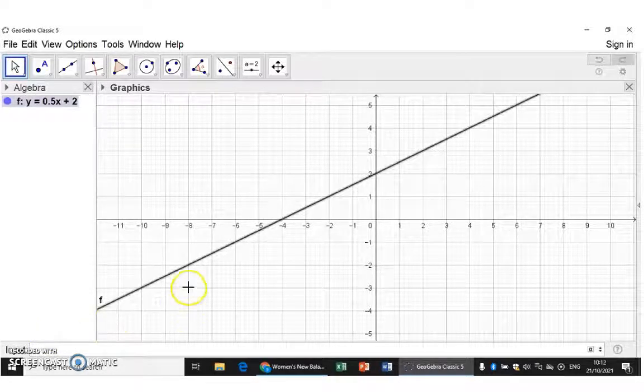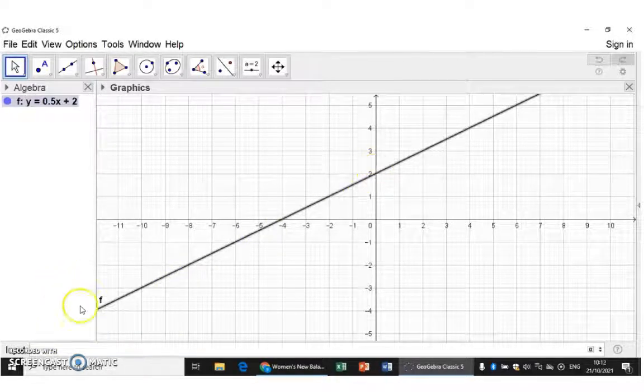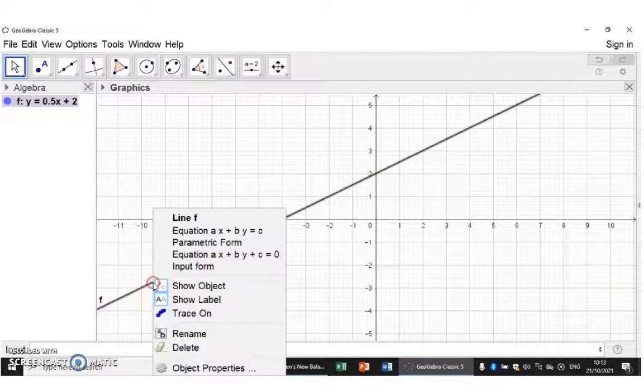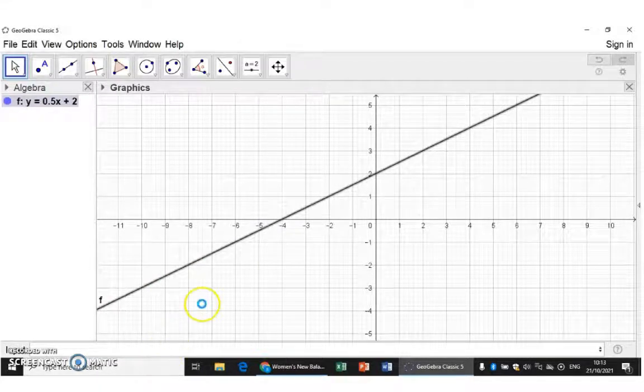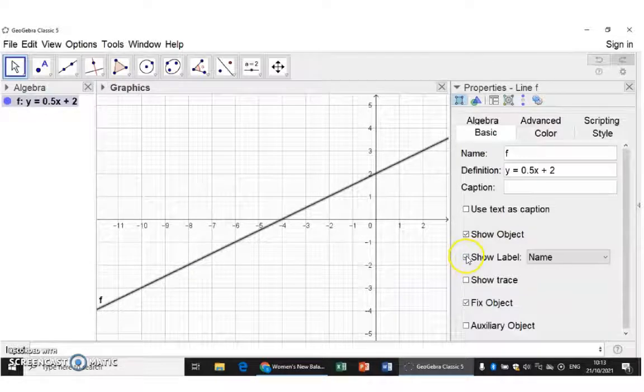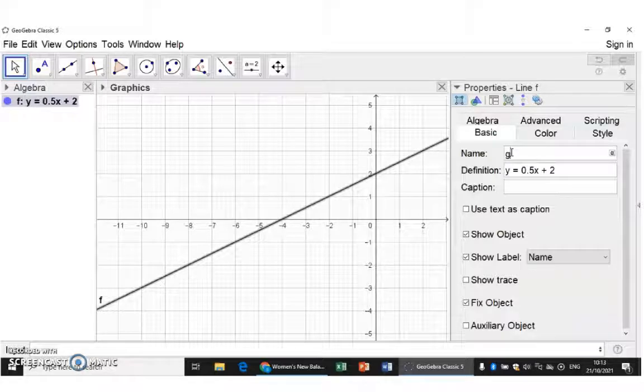So here we have the straight line and it is called graph f. We can now change the appearance at properties. When we open the properties, you can choose to remove the label or even give this graph a different name.